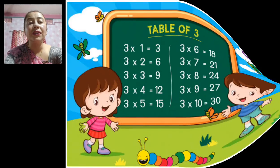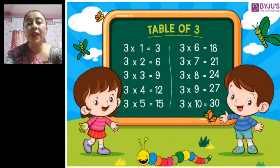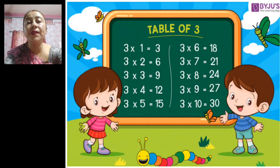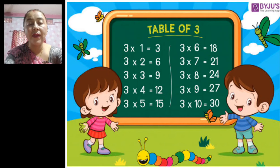Three one's are three, three two's are six, three three's are nine, three four's are twelve, three five's are fifteen, three six's are eighteen, three seven's are twenty-one, three eight's are twenty-four, three nine's are twenty-seven, three ten's are thirty. You have learned the table of three!